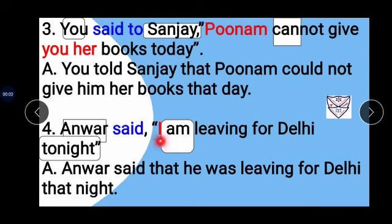Example 4: Anwar said, 'I am living for Delhi tonight.' 'Said' is in past tense so conjunction 'that' is added. 'I' changes to 'he' for Anwar, and 'am' changes to 'was.' 'Tonight' changes to 'that night' to show nearness. Answer: Anwar said that he was living for Delhi that night.